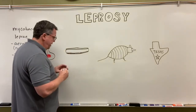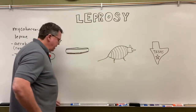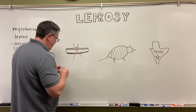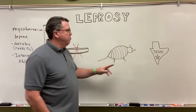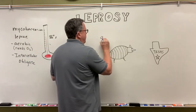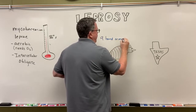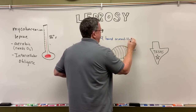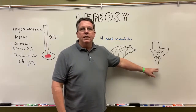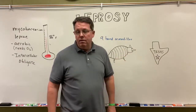Mycobacterium leprae cannot be grown in a lab. What scientists do is they actually grow it in armadillos — specifically nine-banded armadillos. Armadillos are found in Texas, so we've actually had outbreaks of leprosy in Texas before.